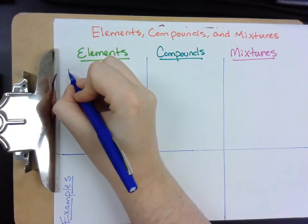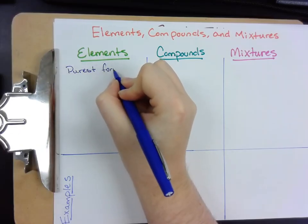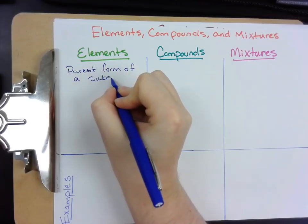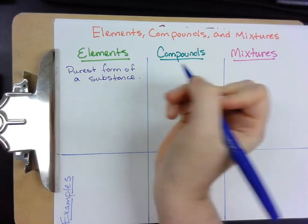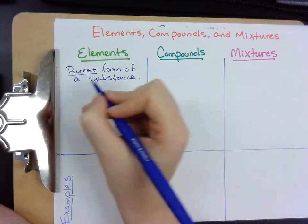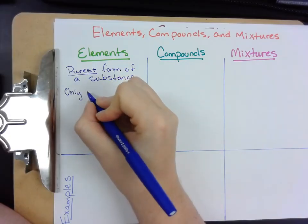An element is the purest form of a substance. We're going to write purest form of a substance. And when we say purest, when we talk about purity, what we're actually saying is that there is only one type of atom.